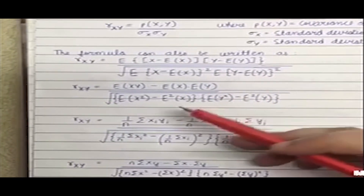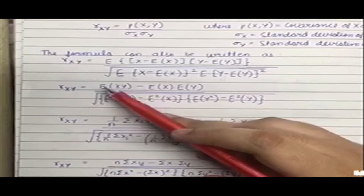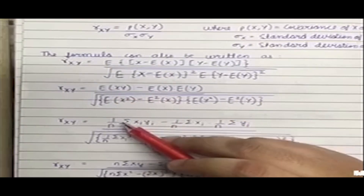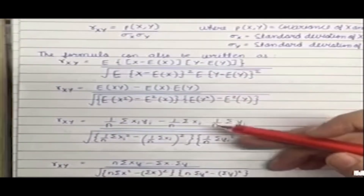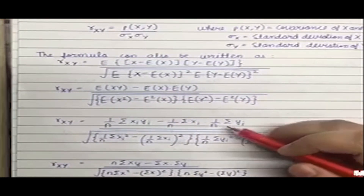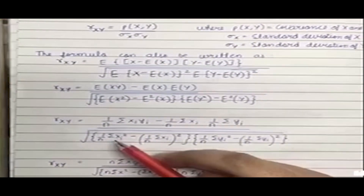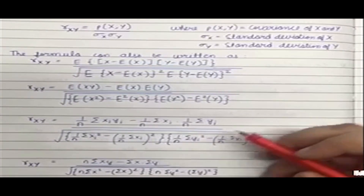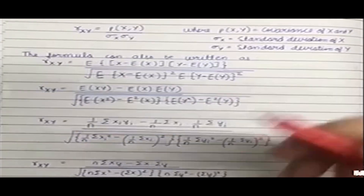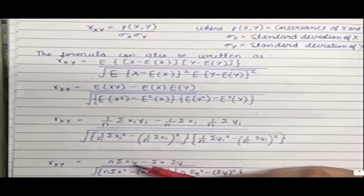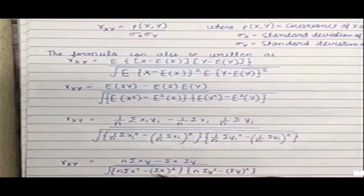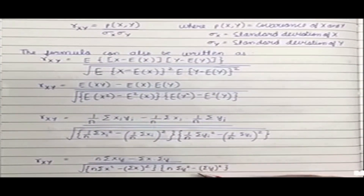Further expanding the formula, E(xy) means the mean of each value of x and y. When we open this formula we get summation of x_i·y_i divided by n, E(x) would be summation of x_i by n, E(y) would be summation of y_i by n. This gives us the final form: n·Σxy − Σx·Σy, divided by the square root of [n·Σx² − (Σx)²] · [n·Σy² − (Σy)²].